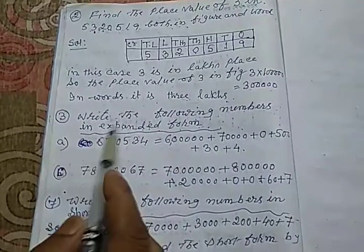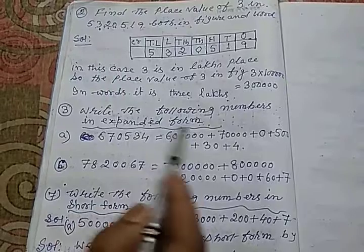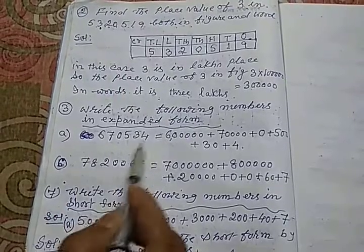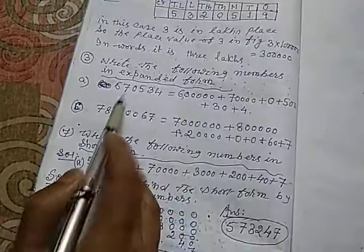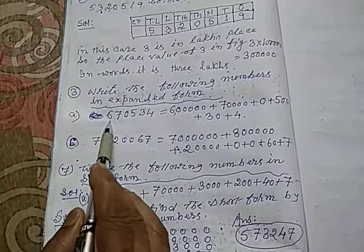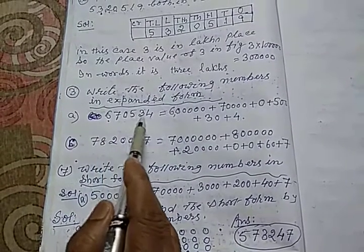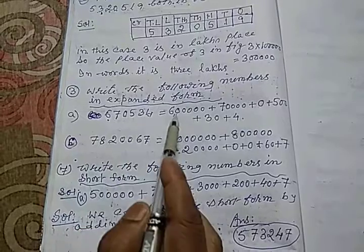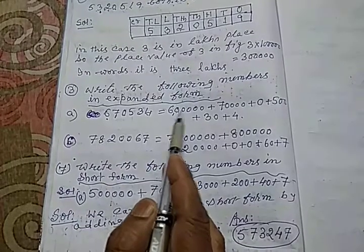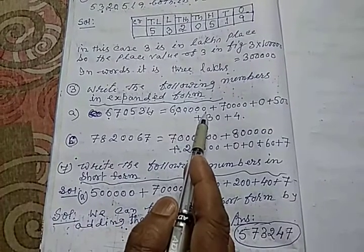Now, question number 3. Write the following numbers in expanded form. Aapko ek number diya gaya hai, jisko expand karna hai. There goes, 6 is the first digit. After first digit, there are 1, 2, 3, 4, 5 digits. So 6 ke baad aap 1, 2, 3, 4, 5, 0 dal doge.